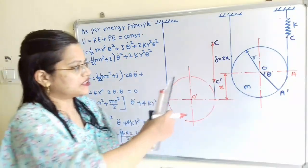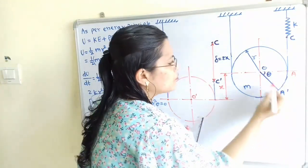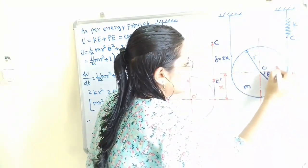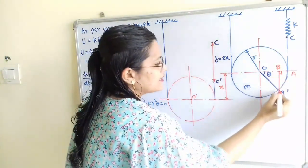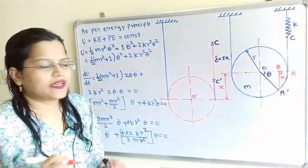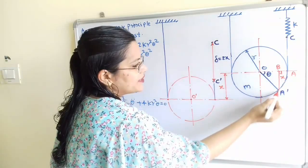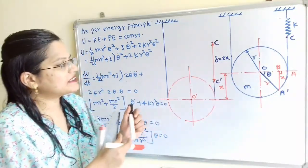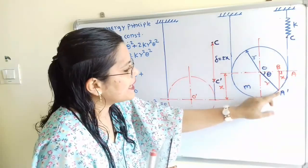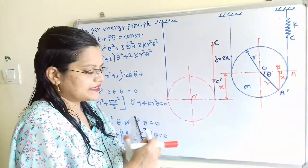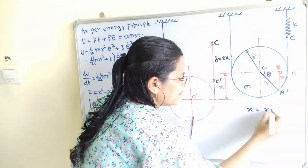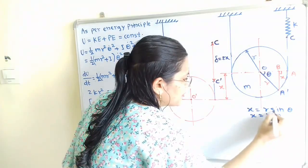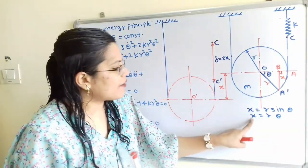The rotational displacement theta is also taking place. We will make a construction: from A' we draw a perpendicular line on line OA. This vertical line intersects at point B. The vertical line A' to B is also equal to x. Since A' is a point on the circumference, OA' is equal to the radius r. From triangle OBA', we can say x is equal to r·sinθ. Since theta is very small, sinθ equals θ, so x is equal to r·θ. We will use this relation going forward.